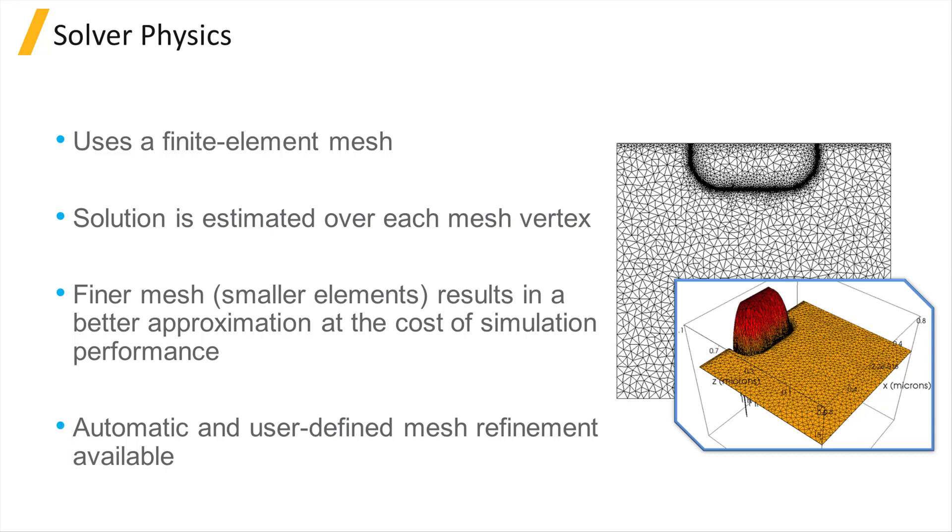Automatic mesh refinement is a feature that automatically uses a finer mesh, for example around the areas where there is a sudden change in properties such as doping and heat generation, to more accurately resolve these changes.